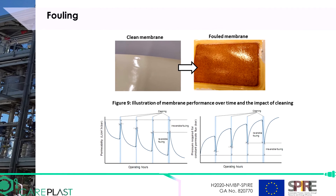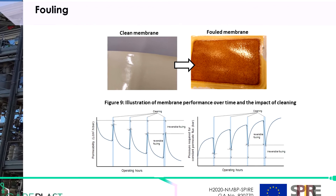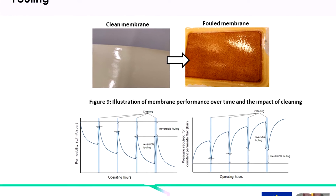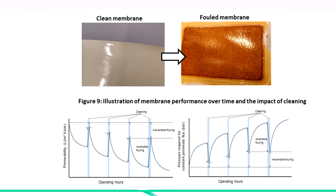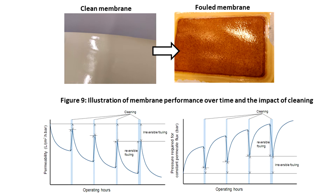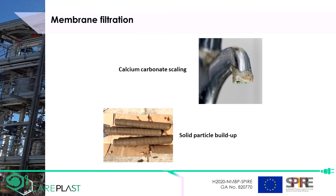During production, fouling can build up on the membrane surface, leading to a reduction of membrane performance. Cleaning is required to partially restore membrane performance. A typical example of industrial operation can be seen in Figure 9. Membrane performance will drop over time, which is partially regenerated by a cleaning procedure. General types of fouling are scaling, caused by deposits of minerals like calcium carbonate and silicon dioxide forming on the membrane surface, and particles forming a cake on the membrane surface. Scaling is often cleaned using an acidic cleaning agent.